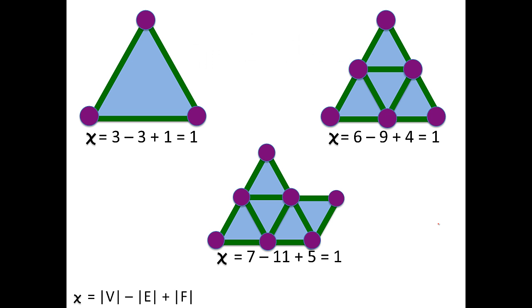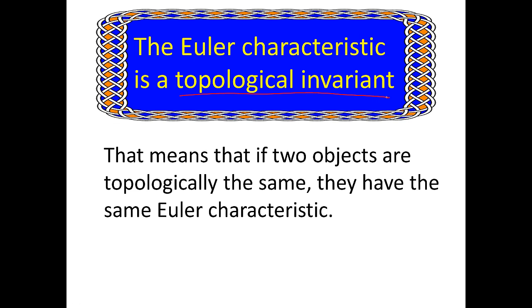How you triangulate an object does not affect its topology. These two triangles are both triangles and they're topologically the same. Recall that subdividing a triangle did not affect the Euler characteristic; in fact, no matter how you triangulate an object, its Euler characteristic will be the same. Another operation that did not affect the Euler characteristic was adding a triangle so that one of its edges agreed with one of the existing edges — that also doesn't change the topology.